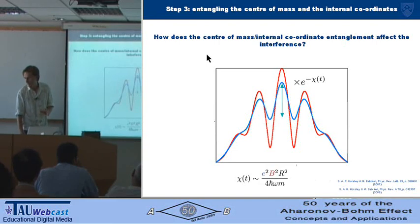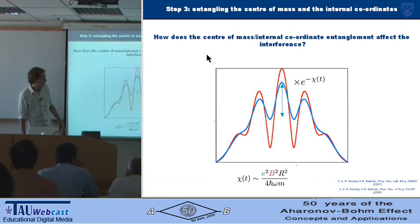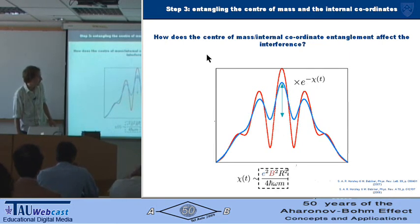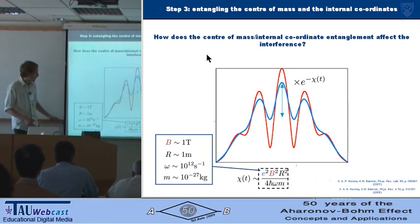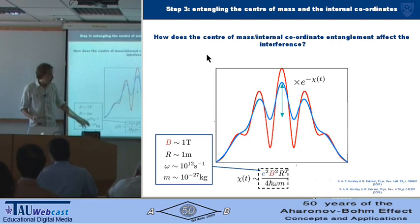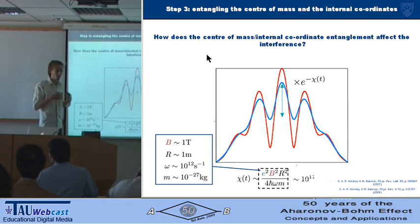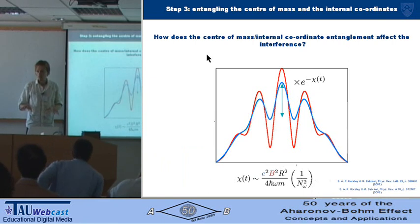So for short time periods—just a few oscillations of the internal degree of freedom, so not very long at all—chi takes this value. For typical numbers: a magnetic field of say a Tesla, radius of the ring a metre, just like in the original experiment—it goes about 10^12, and the mass 10^-27, so this thing is like 10^11. So it's a big loss of coherence for very short time periods. But it decays as one over the number of oscillations.